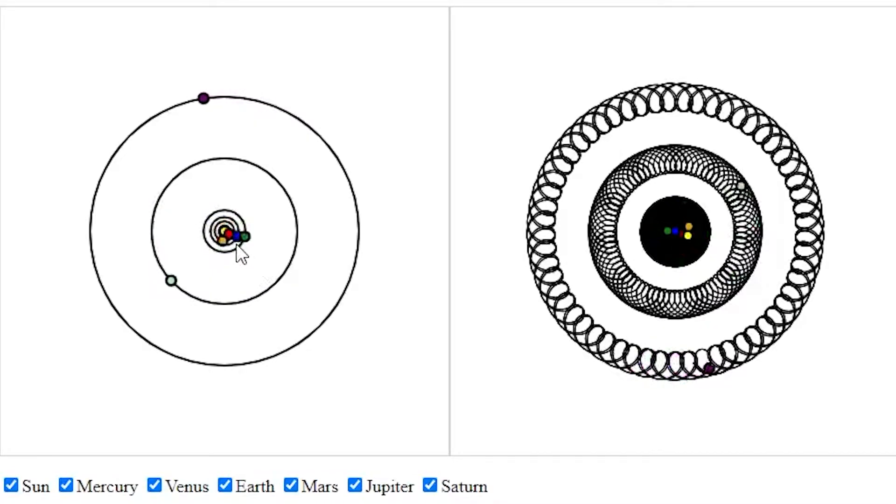And then I made what is called a coordinate transformation, where I use simple mathematics to view what this motion looks like as seen from the earth. And that's just a few lines of mathematics and then you immediately get from this to this insanely complicated picture.